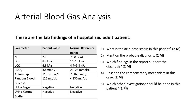It doesn't matter whether anion gap is given or not. Electrolytes may also be given instead. Other relevant supporting findings like random blood glucose, urine sugar, and ketone bodies may also be given, along with urine pH. This is the overall approach for blood gas analysis parameters.